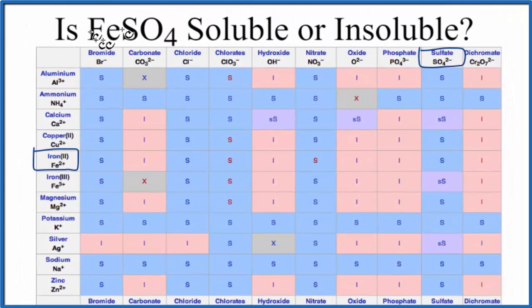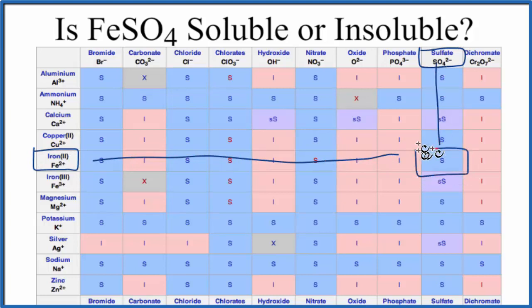Note we know that this is iron 2, because the sulfate ion has a 2- ionic charge. So for this to be balanced, this has to be iron 2, Fe2+. We go across, we go down, and that S means that FeSO4 will be soluble in water.